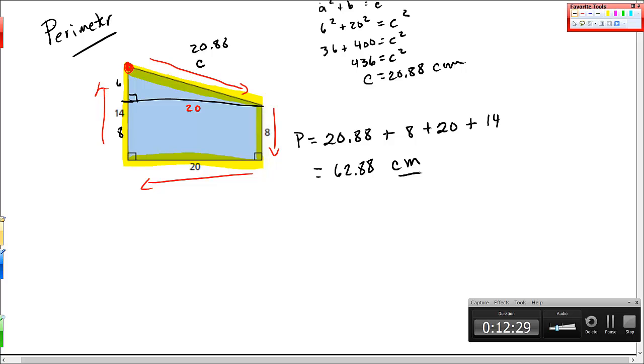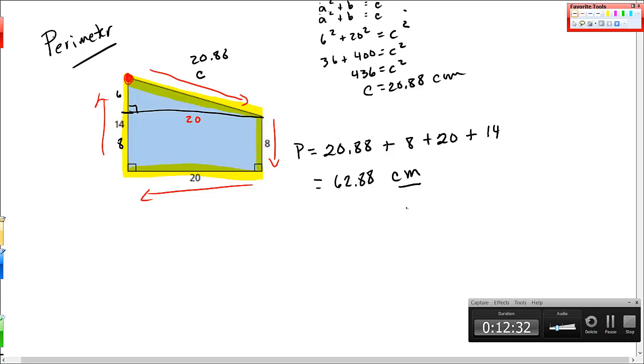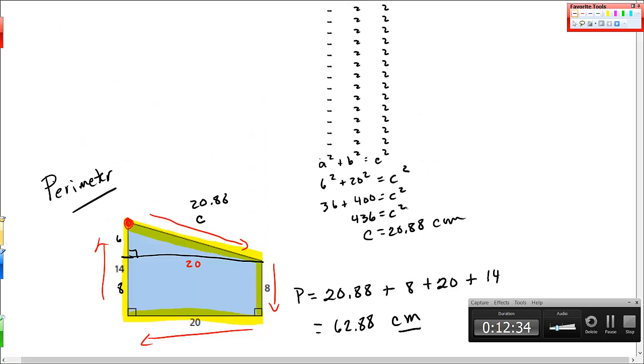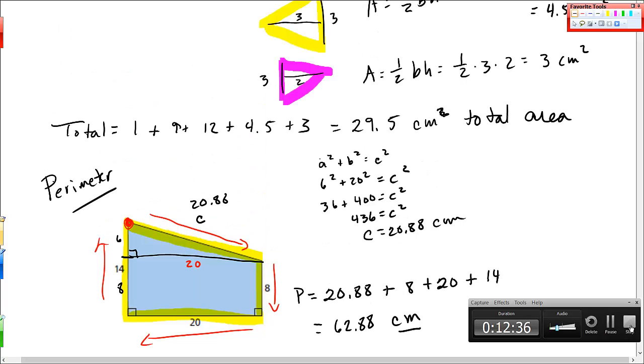Sometimes you'll have to use circumference formula in here if you have parts of circles. But overall, these are the basic ideas for perimeters. Let me know if you have questions.